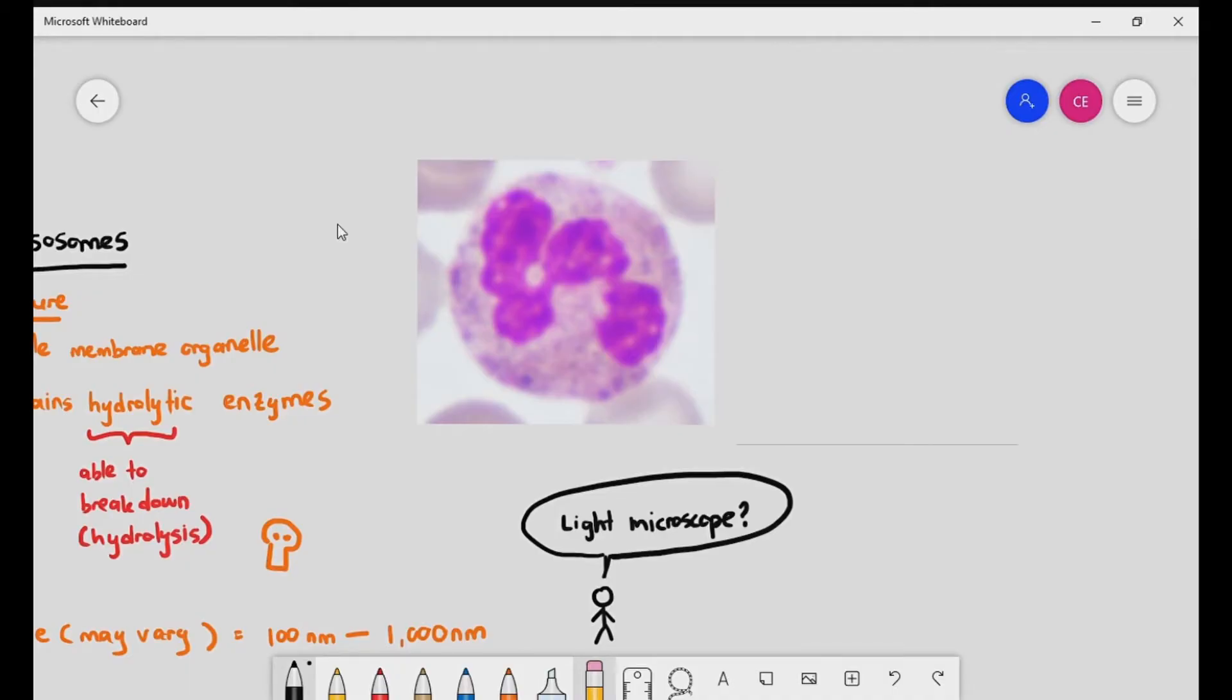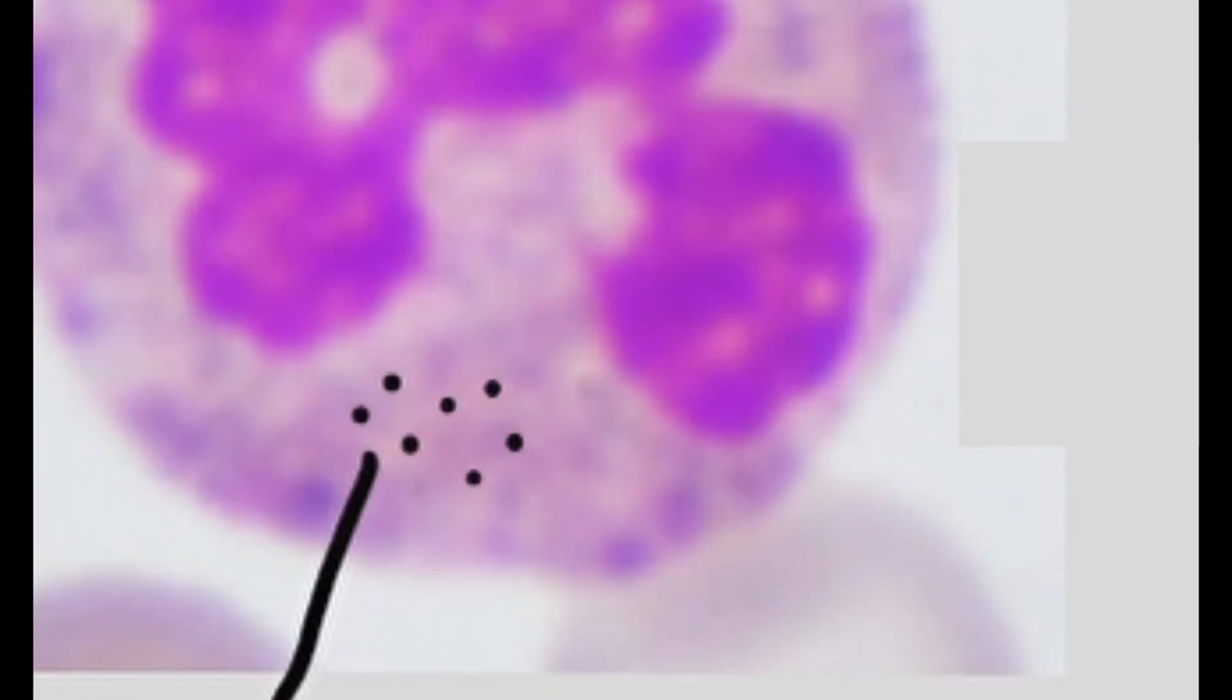As you can see over here, the following cell is a neutrophil. The darker purple color is actually the nucleus. Yes, the nucleus looks a bit weird for this particular cell. Are you able to see the granulations or those tiny little spots on the neutrophil? Those tiny little spots are actually the lysosome. We cannot see the lysosome too clearly even under the light microscope because the lysosome itself is made up of a single membrane.